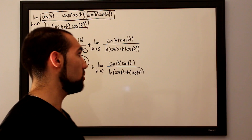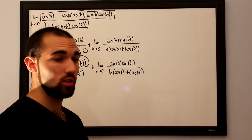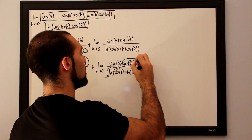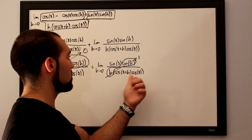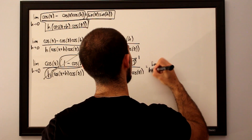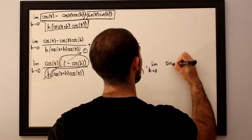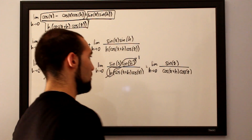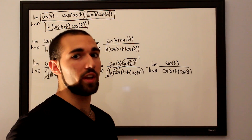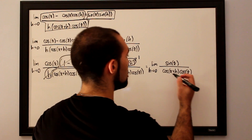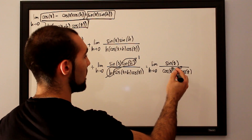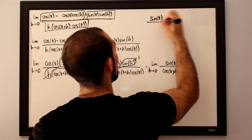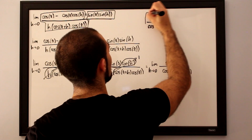Using the known trigonometric limit that the limit as h approaches 0 of sine of h over h equals 1, that factor simplifies to 1. We are left with the limit as h approaches 0 for sine of x over cosine of x plus h times cosine of x. Since substituting h equals 0 gives no indeterminate form, we evaluate directly to get sine of x over cosine squared of x.